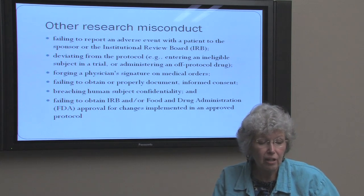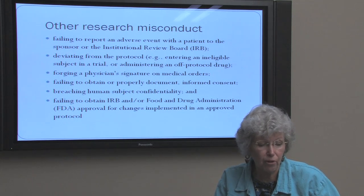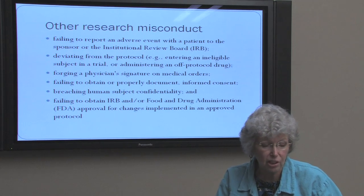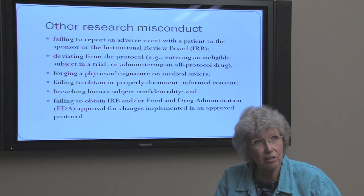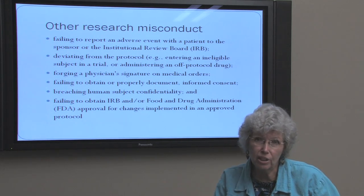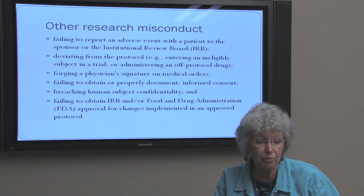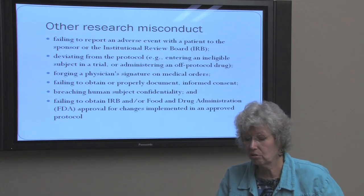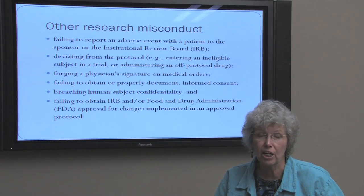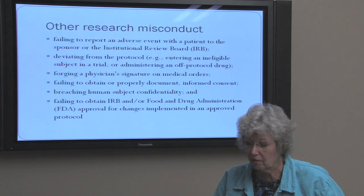There are other kinds of misconduct, for example failing to report an adverse event with a patient to the sponsor or to the institutional review board, or a breach of human subject confidentiality. There are a number of them listed on the slide. These infractions are not investigated by the Office of Research Integrity, but there are other organizations within the federal government that do those investigations, for example the Food and Drug Administration. There are a lot of sanctions that can occur for researchers who do not follow accepted protocols and maintain complete integrity of their research process.